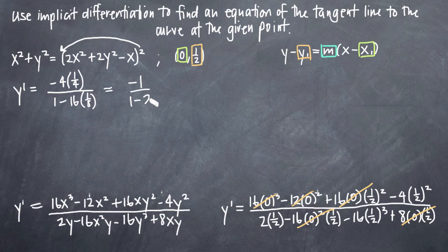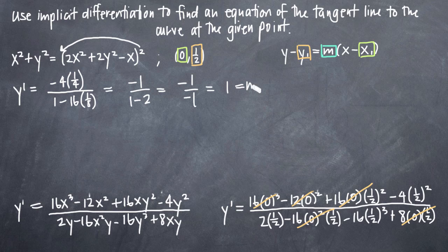This simplifies to negative 1 over negative 1, which is just 1. So what I found here is m. By finding the derivative and plugging in the point (0, 1/2), I found the slope of the tangent line at that point. So m equals 1.